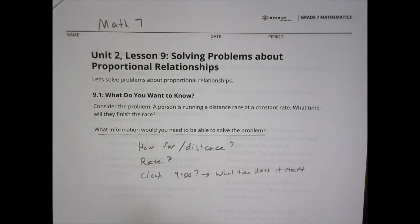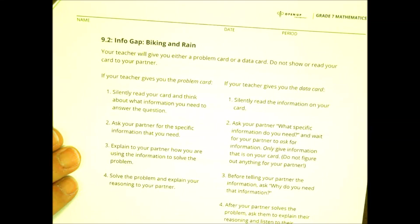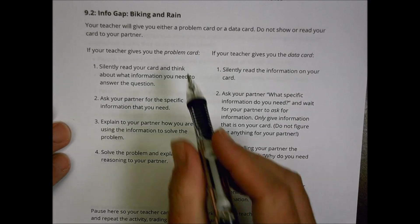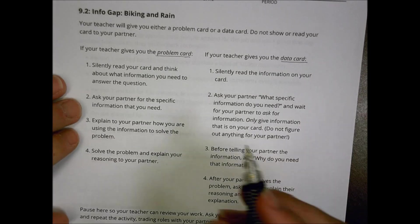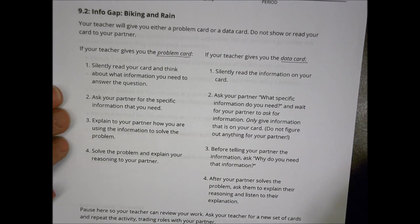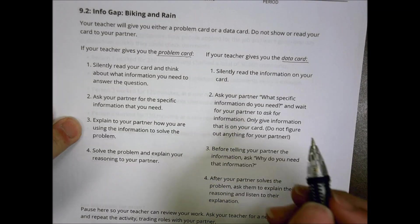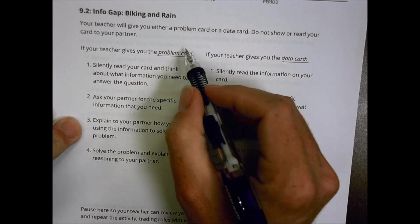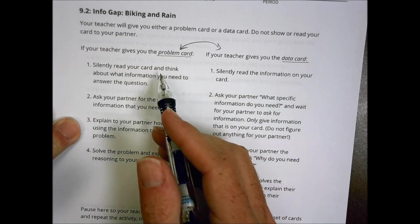What you did today in class — and if you missed this, it's hard to make it up on a video, sorry about that — is your teacher gave you some cards. You either had a problem card or a data card. The problem card gave you a question you're trying to solve, but the information you needed was not there. The data card had all the information. So with a partner, the idea was to have a conversation back and forth to solve the problem using that person's information.